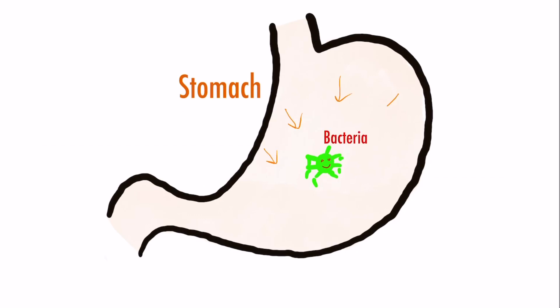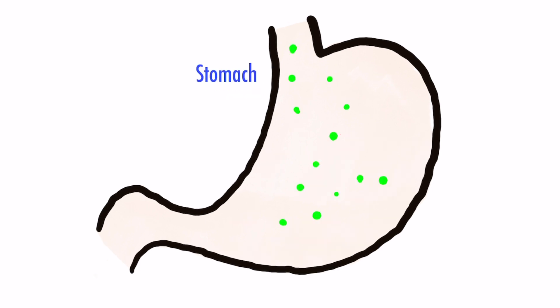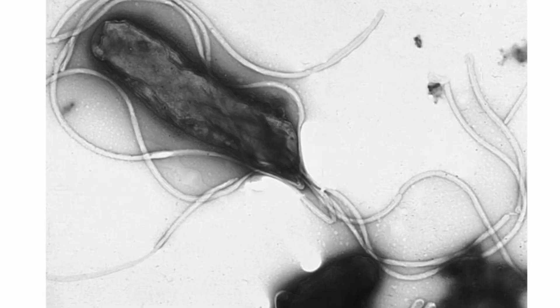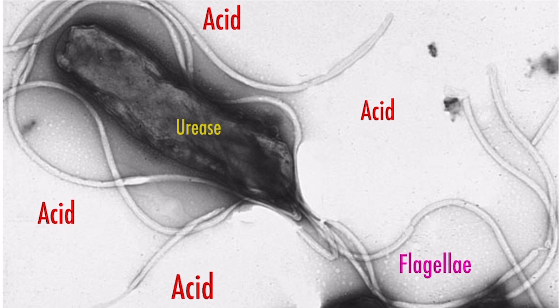The main challenge for any bacteria entering through the oral route is to face gastric acid. Acidic pH, which can reach up to 2, is enough to kill almost 99% of bacteria ingested. So how does Helicobacter pylori survive this acid — not only survive but also cause numerous pathologies in the stomach? Helicobacter pylori has two important features: the presence of flagella and the presence of urease enzyme.